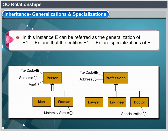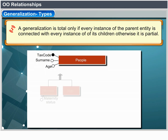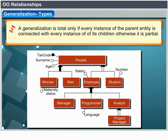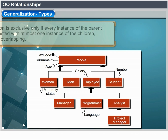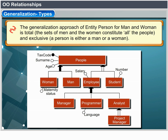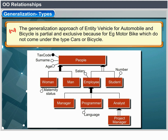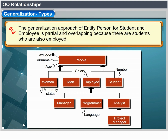A generalization is total if every instance of the parent entity is also an instance of one of its children; otherwise it is partial. It is exclusive if every instance of the parent is at most an instance of one child; otherwise it is overlapping. For example, the generalization person into man and woman is total and exclusive. The generalization vehicle into automobile and bicycle is partial and exclusive. The generalization person into student and employee is partial and overlapping, because some students are also employed.